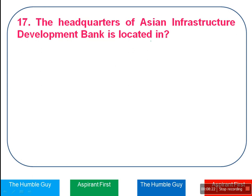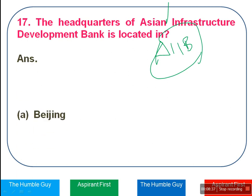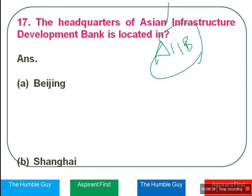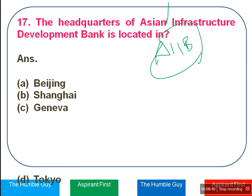The Headquarters of Asian Infrastructure Investment Bank (AIIB) — where is it located? The right answer is Option A — Beijing.